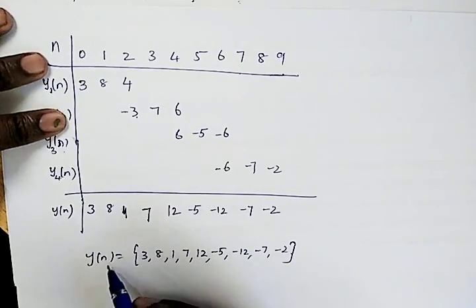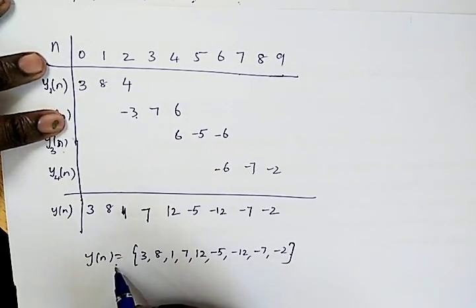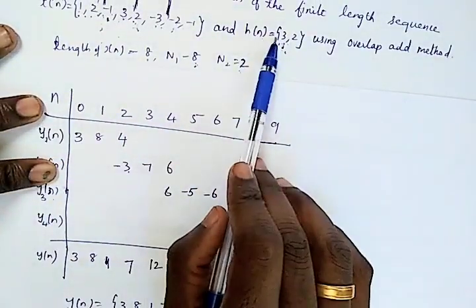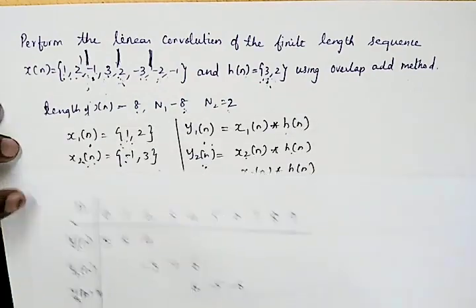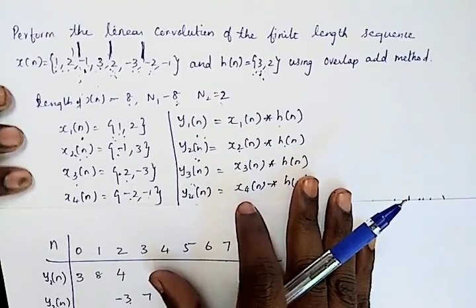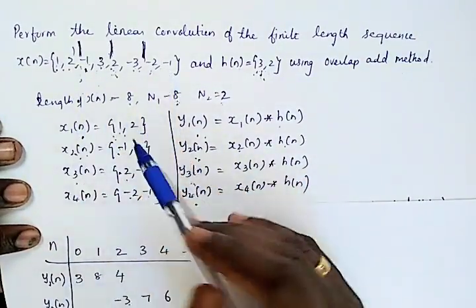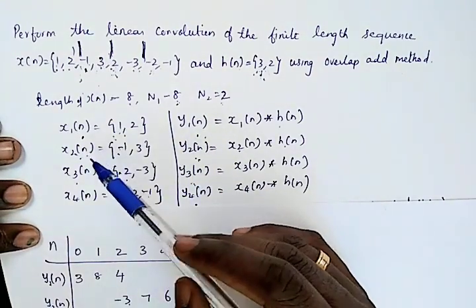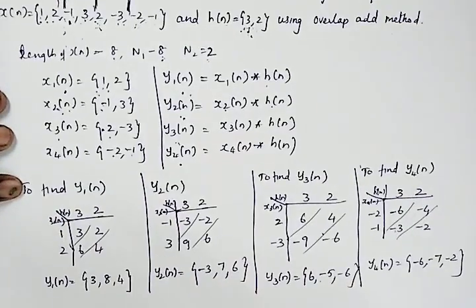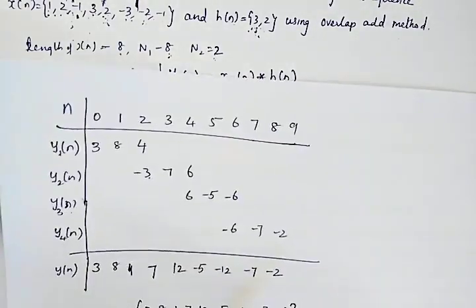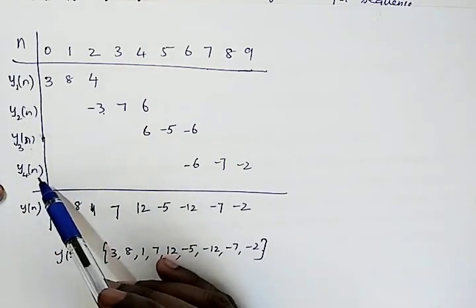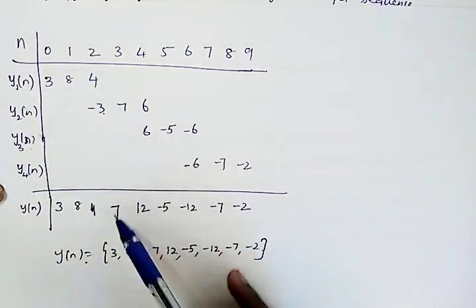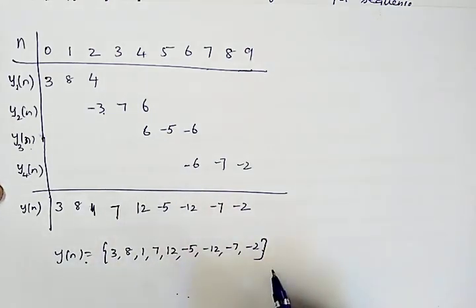The final output y[n] = {3, 8, 1, 7, 12, -5, -12, -7, -2} is the linear convolution of x[n] and h[n] using the overlap-add method. To summarize: Step 1 is to subdivide the larger sequence into smaller sections; Step 2 is to find the linear convolution of each smaller section with h[n]; Step 3 is to add the outputs, including the overlapping regions, to get the final result.